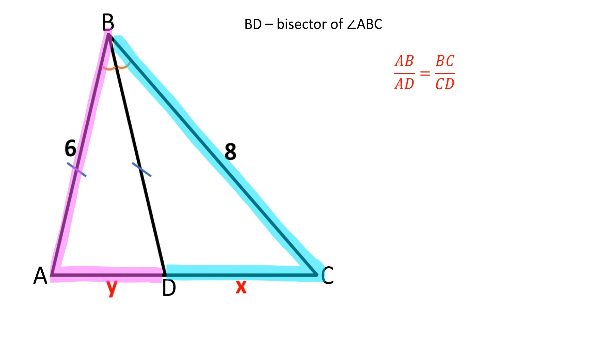The angle bisector of a triangle divides the opposite side into two segments that are proportional to the other two sides of the triangle.